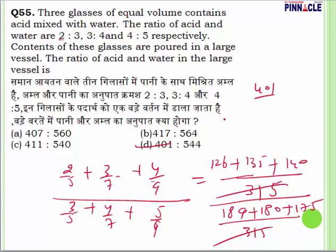This is an important variety — the 3-mixer case. When you have three mixer cases and need to find acid-to-water ratio in this format, you should always use this method of finding individual fractions and combining them. Note down this variety — it is important.